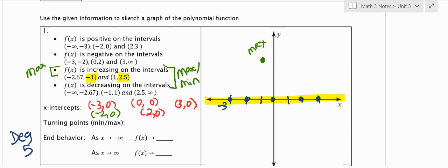I see 2.5, so 1, 2.5 is like right here. And maybe I'll do a second max. I don't know how high to go, but I just know that it's going to be a higher point in the graph.